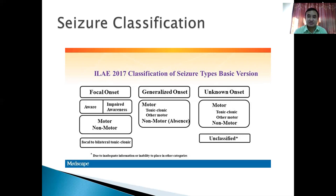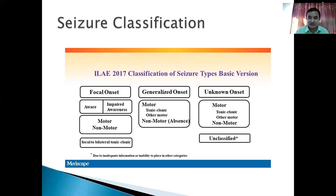Similarly there are different types of generalized onset, where a larger part of the brain is involved. The patient can present with generalized tonic-clonic Caesar, tonic Caesar, or absence Caesar — where there is a brief loss of consciousness. Sometimes it is very difficult when taking history from the patient to determine whether it is focal or generalized onset. So it may be classified as unknown onset. Basically there are three types: focal onset, generalized onset, and unknown onset.